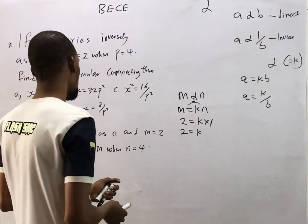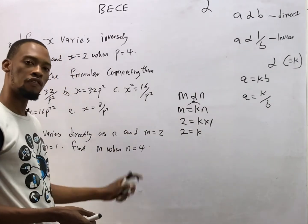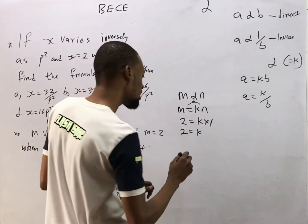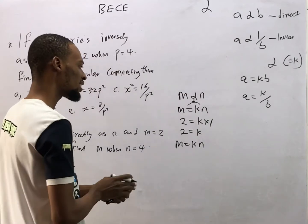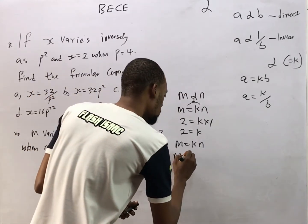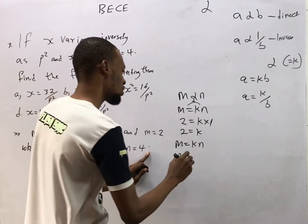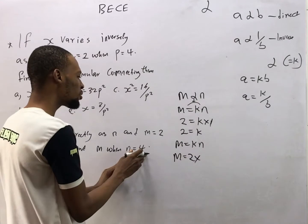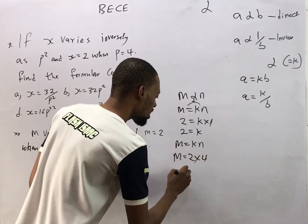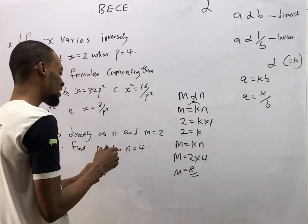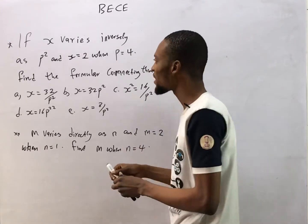Now that we have the value of k, the question says find m when n = 4. The relationship between m and n is m = kn. We know k is the constant 2, times the new value of n which is 4. So m = 2 × 4 = 8. That's your final answer.